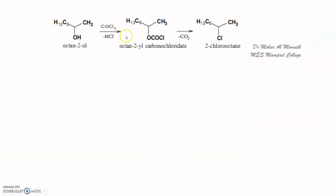A similar mechanism and similar retention of configuration is observed when using phosgene (COCl2). With phosgene there is loss of HCl and CO2, whereas with thionyl chloride there is loss of HCl and SO2. For example, when octanol is treated with phosgene, you get 2-chlorooctane again with retention of configuration.